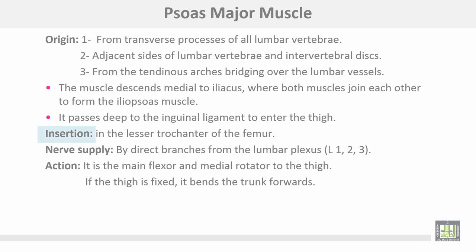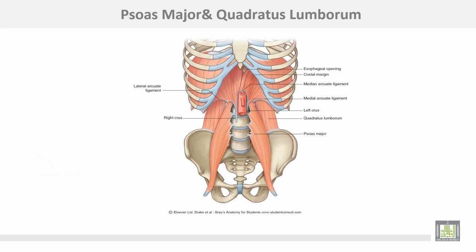Insertion into the lesser trochanter of the femur. The nerve is supplied by direct branches from the lumbar plexus, which lies inside the psoas major muscle itself, from lumbar 1, 2, and 3. Action: it is the main flexor and medial rotator of the thigh. If the thigh is fixed, it can bend the trunk forwards. This is the psoas major muscle.